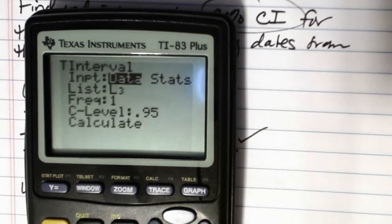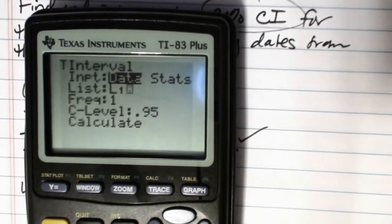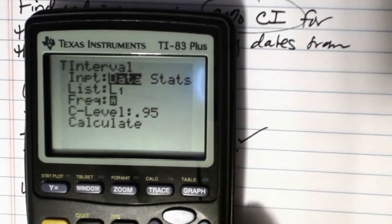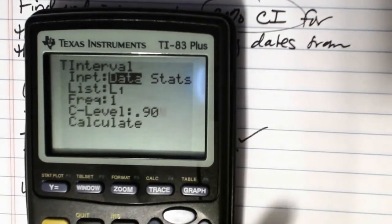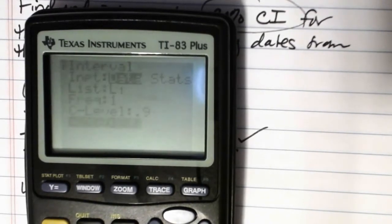When the calculator says list, it's asking you in which list your data are stored. Mine are in L1. So I want to do second one to get my L1 to pop up. If yours were in list five, you would do second five. Frequency should be set to one. And then we get to put in our confidence level, which in this case we are finding a 90% confidence interval for the tree ring data. And when you have all of that put in, then you'll just calculate. And it'll crunch through for a minute.